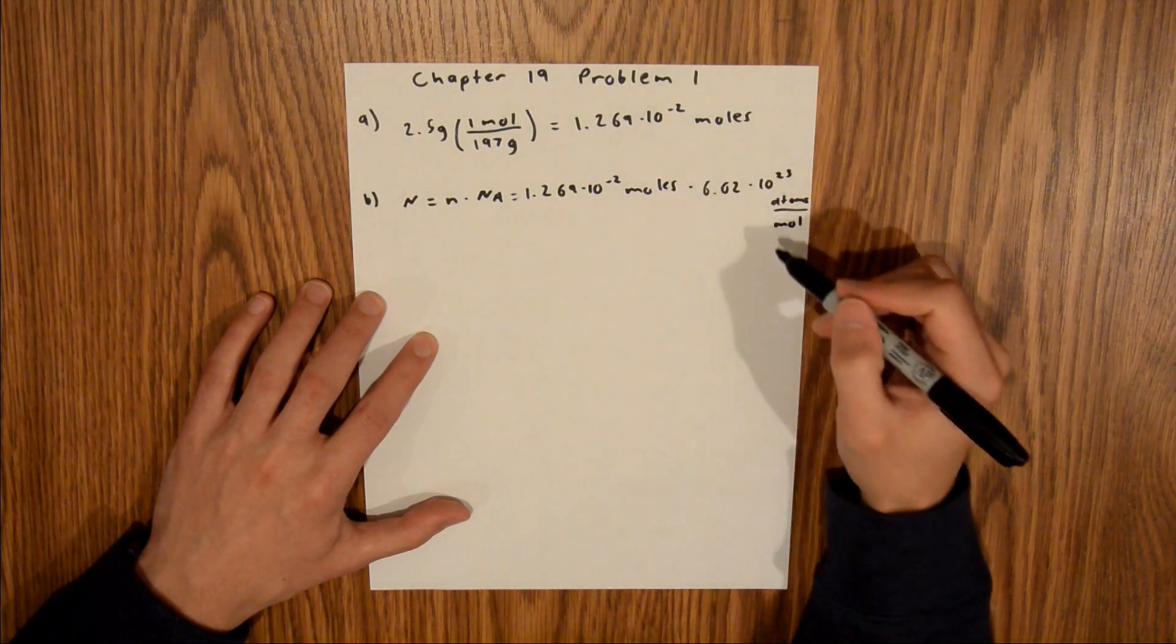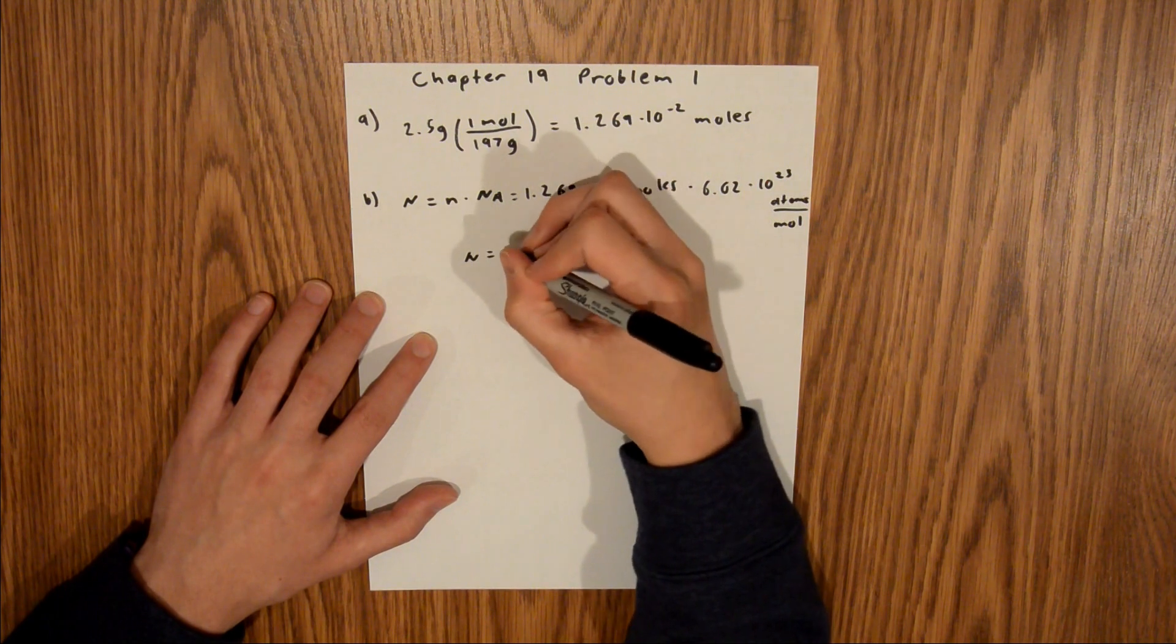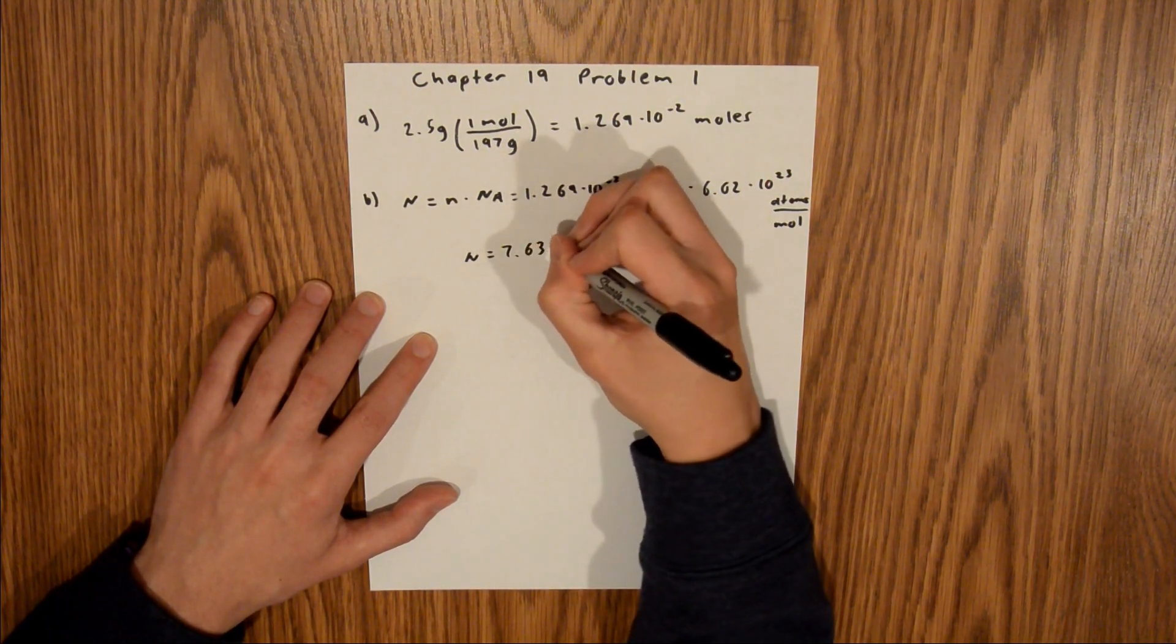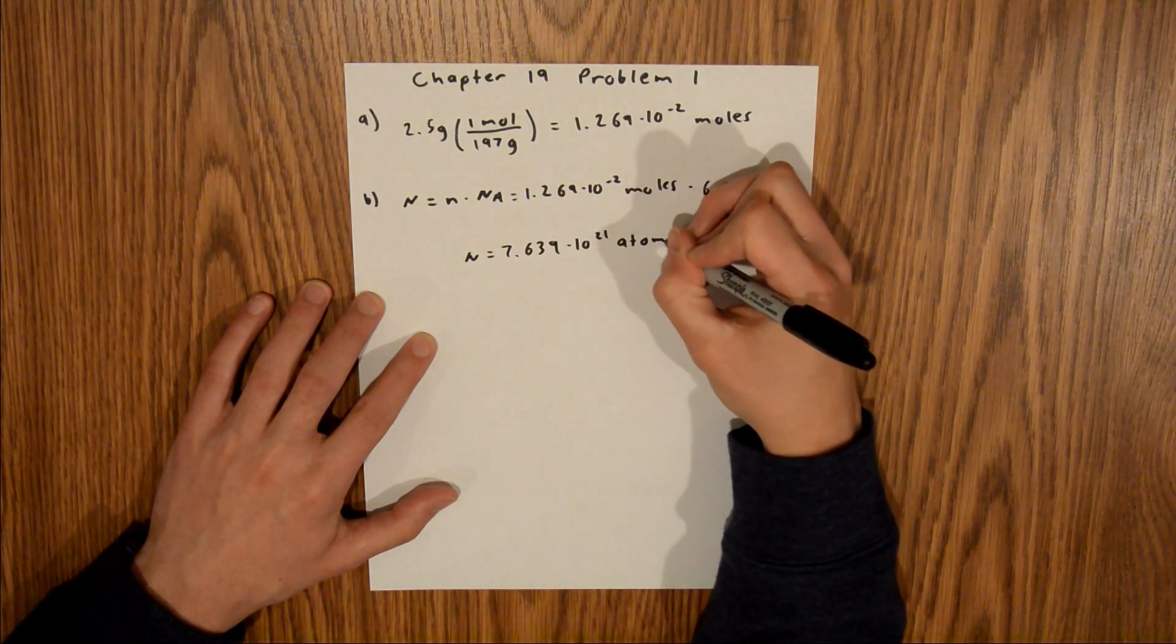So, then the moles will cancel out, and you just have atoms left. And so, the number of atoms is equal to 7.639 times 10 to the 21 atoms.